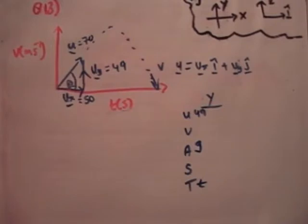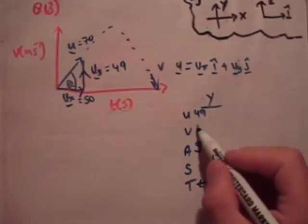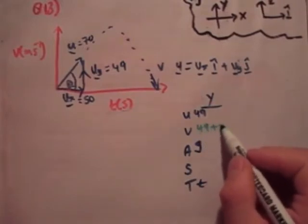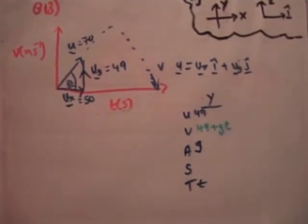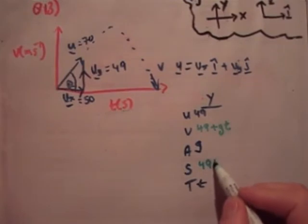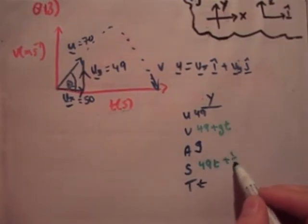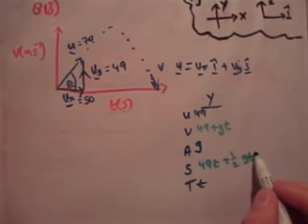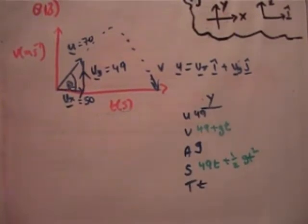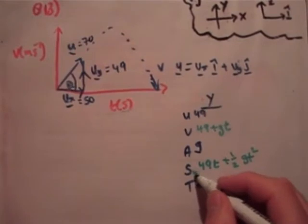So let's use v is equal to u plus at. So here it's 49 plus gt. And S is equal to ut plus a half at squared. So 49t plus a half gt squared.